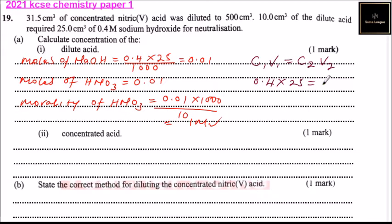equals C₂ multiplied by 10. So C₂ equals 0.4 multiplied by 25 divided by 10, which gives you 1 mole. Either of the two methods works.